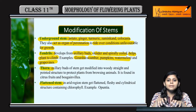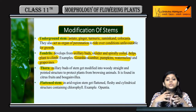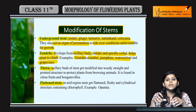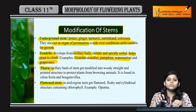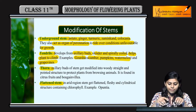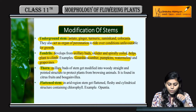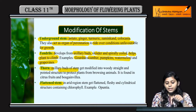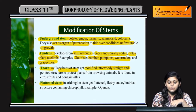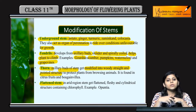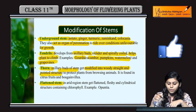Next are thorns. Thorns kya hote hain - jo bhi kante dar structure hote hain, stem apne aap ko waise modify kar leti hai so that koi bhi grazing animal ya herbivores aa kar usse disrupt na kar saken, us plant ko harm na pahuncha saken. So axillary buds hoti hain, ye bhi modified hoti hain into woody, straight and pointed structures jo plant ko protection provide kerti hain.